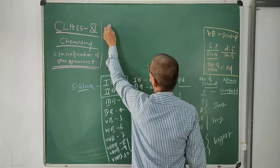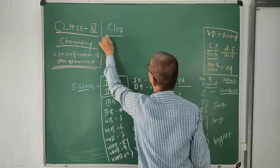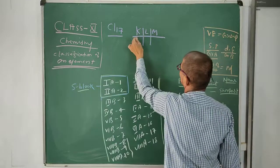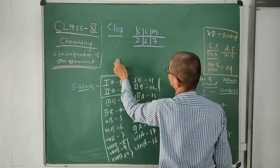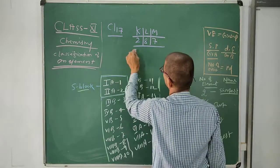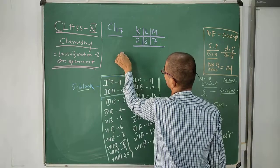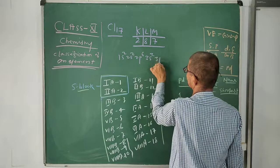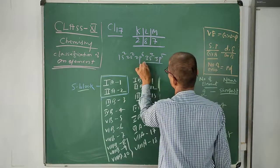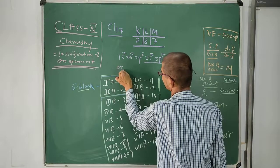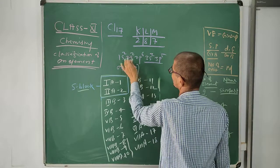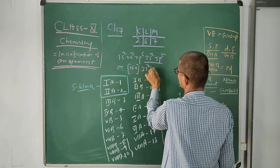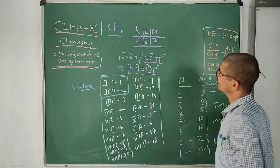Now in the case of chlorine, atomic number is 17. Write down the electronic configuration: 2, 8, 7 in terms of orbit. In terms of orbital: 1s², 2s², 2p⁶, 3s², and 3p⁵. This is the outermost configuration. We can write it in short as [Ne] 3s², 3p⁵, because 2 + 2 + 6 = 10, which is the atomic number of neon. So this is the outermost electronic configuration of chlorine.